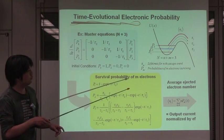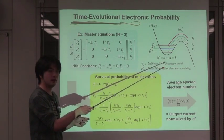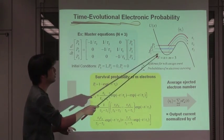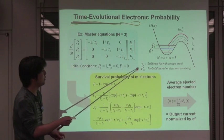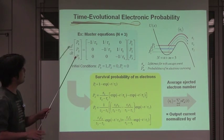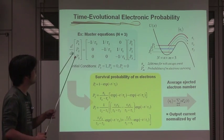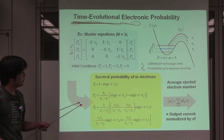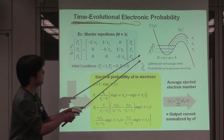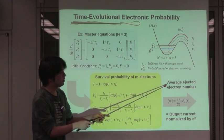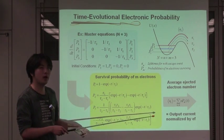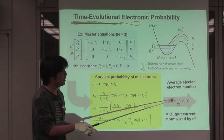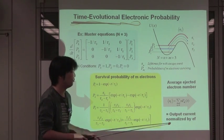We can redefine the lifetimes for n-th escape event to occur in one cycle as tau_m. The probability of m electrons surviving in the quantum dot are defined as p_m. We can describe the simple master equation like this, under this initial condition. By solving this master equation, we can obtain the time evolution form of the survival probability in each state. Finally, the average ejected electron number can be calculated as an expected value of the escape probability. And this can be experimentally measured as the output current normalized by EF.